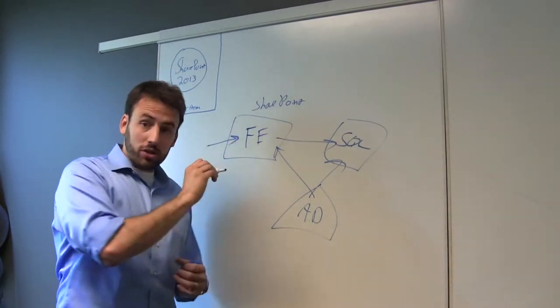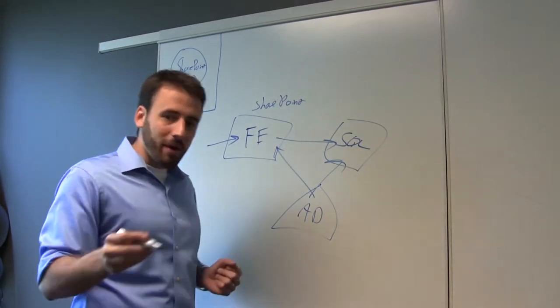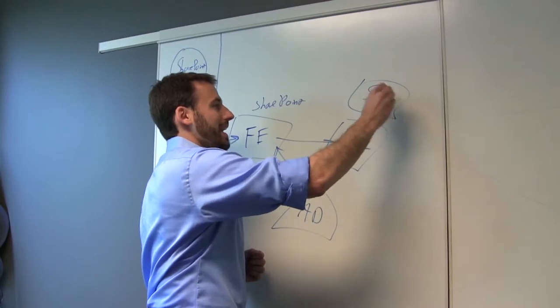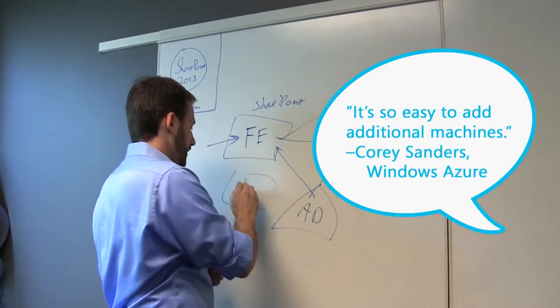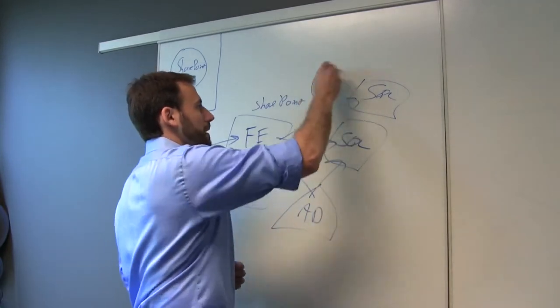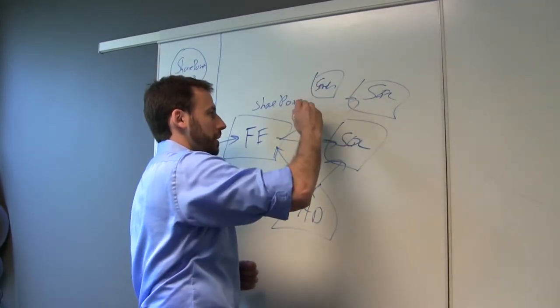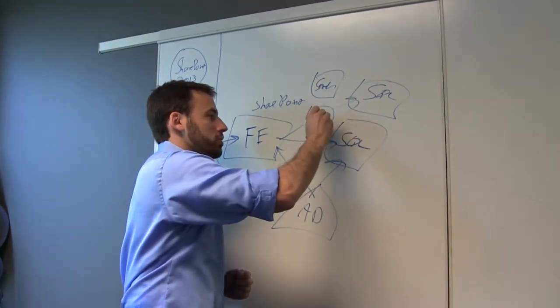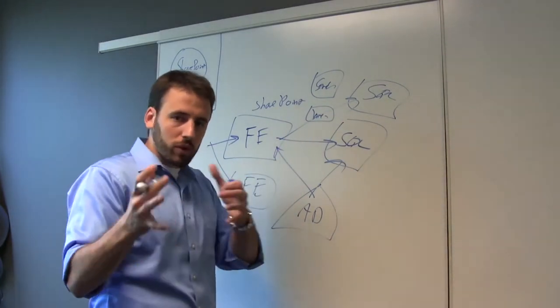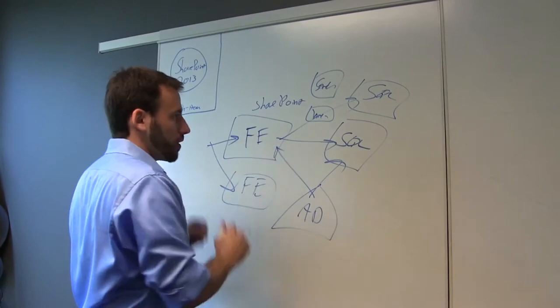So when you start building this and you start saying, great, now I want to actually test it, it's so easy to just add additional machines. You start building out your actual full farm with high availability, you finally got maybe a middle tier for search or maybe you're setting up Yammer for this. And you can just grow it and dev and test and actually build out this full farm to be able to really run it for real.